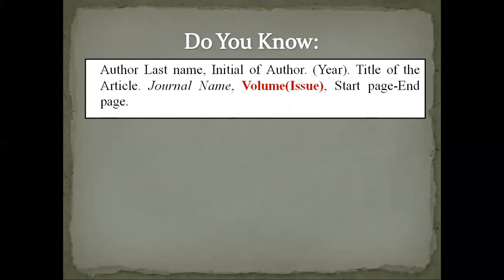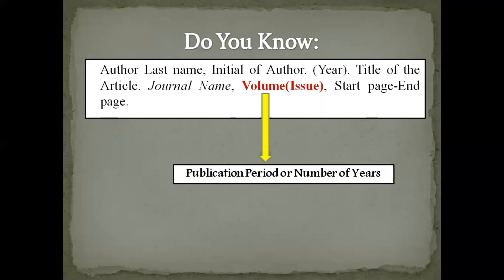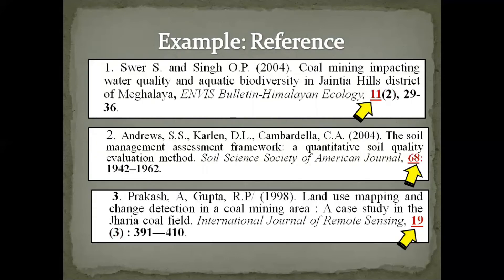When you refer to a volume of any research journal article, it indicates the publication period — that is, the number of years the journal has been actively publishing research articles. It is easy to remember: one year equals one volume. In this example, volume 11 indicates 11 years since the inception of the research journal known as the Arid and Waste Bulletin — Mammalian Ecology.